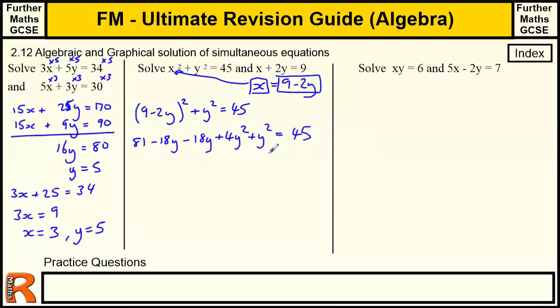And that all equals 45. So we need to simplify this side up a bit. So we've got 81 minus 36Y. 4Y squared plus Y squared is 5Y squared. And that's 45. So this is a quadratic in Y. We can solve this hopefully by factorizing. Let's take the 45 over to this side. If we take it away then we need to have 5Y squared minus 36Y plus 36 equals 0. Just to get it in a bit more familiar format we'll put the Y squared at the front.